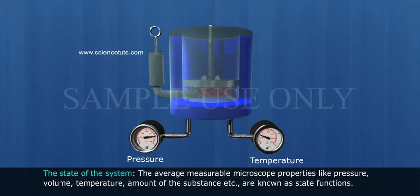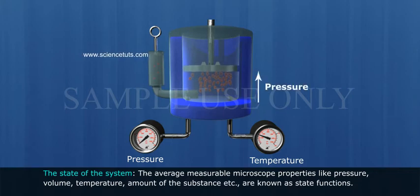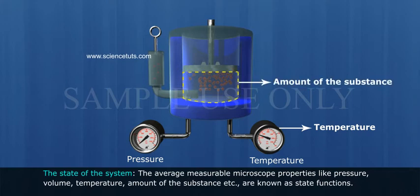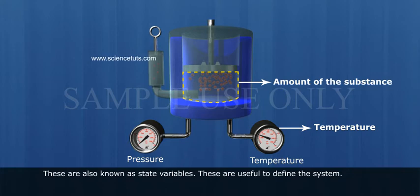4. The state of the system: The average measurable microscopic properties like pressure, volume, temperature, amount of the substance, etc. are known as state functions. These are also known as state variables. These are useful to define the system.